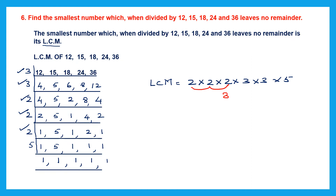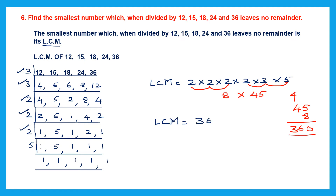Let's count: there are three 2s — so 2 × 2 × 2. There are two 3s — so × 3 × 3. And there is one 5. Multiplying: 2 × 2 = 4, 4 × 2 = 8, 3 × 3 = 9, 9 × 5 = 45. Now 45 × 8: 8 × 5 = 40 carry 4, 8 × 4 = 32 + 4 = 36. So the LCM is 360. The smallest number which when divided by 12, 15, 18, 24 and 36 leaves no remainder is 360.